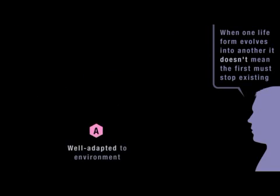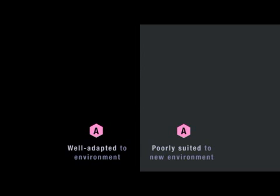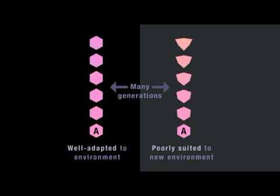Take life form A, so well adapted to its environment that it changes very little from one generation to the next. But then part of the population spreads to a new environment where it's poorly suited. Different survival pressures now lead generations of this separate population to change dramatically, while the changes in the first population remain barely noticeable. After many generations, Population 1 still exists in more or less its original form, alongside the now very different Population 2. It didn't have to die out or change at the same rate.